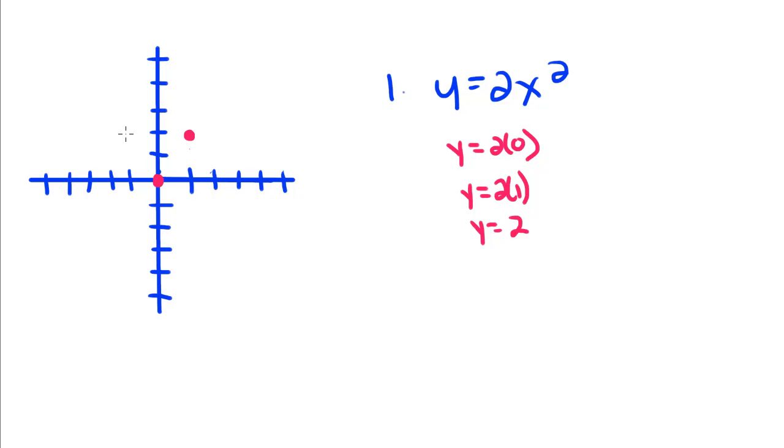Same thing is going to happen if I plug in negative 1. 2, 2 squared. So 2 times 2 squared, which is 4, is 8. This is going to be off my little chart. I'm just going to put it up here. And then, same thing if I plug in negative 2.